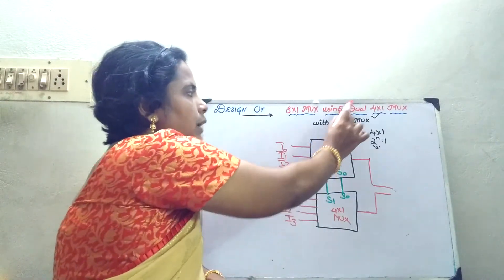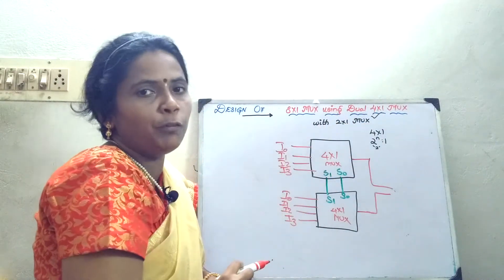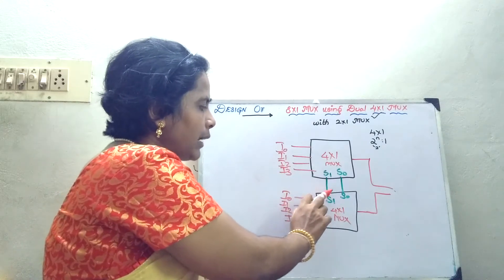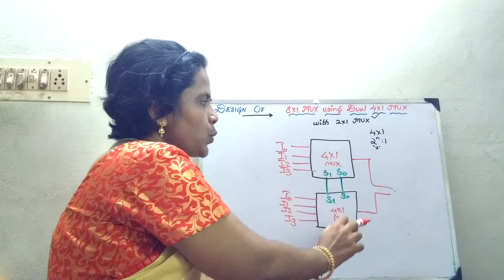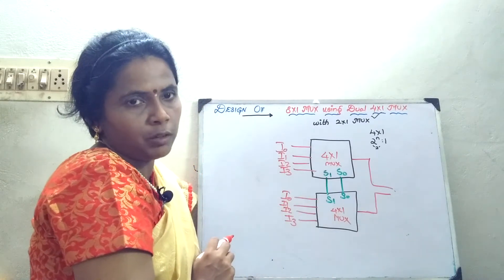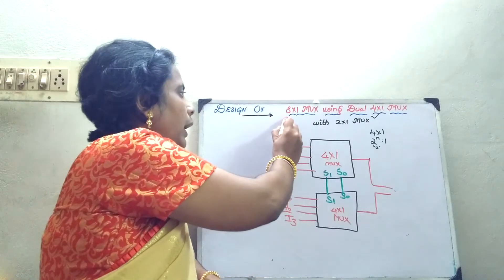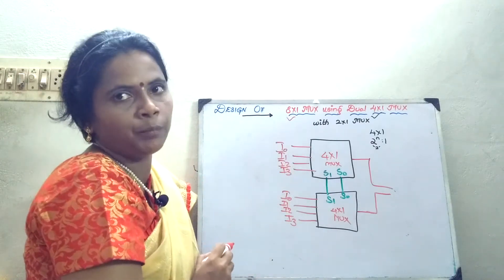Now, this completes the functionality of the dual 4 cross 1 mux. You have 4 inputs, 2 select lines and each mux will have 1, 1 output line. Now, this module should be incorporated with your 8 cross 1 mux design.